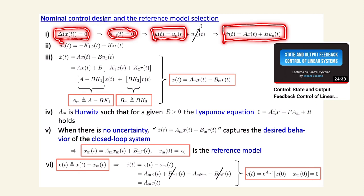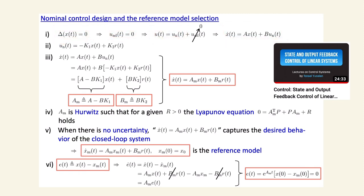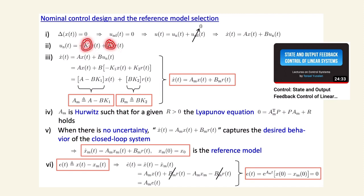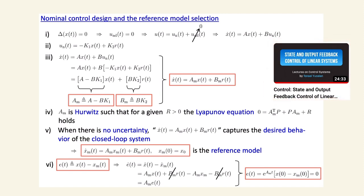Without loss of generality, the nominal control has a feedback part and a feedforward part: u_n = -K1*x + K2*r, where x is the measurable state and r is the reference to track. For selection of K1 and K2 for state feedback and output feedback, I refer to a separate video on my channel covering all the details.